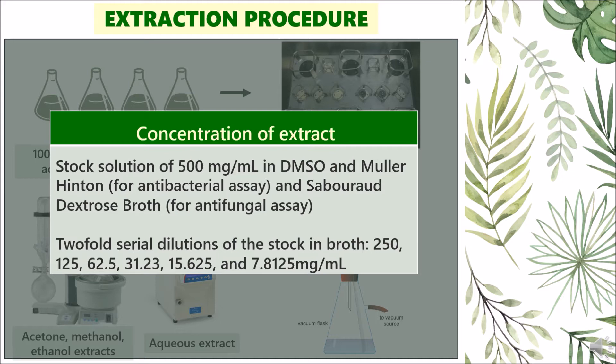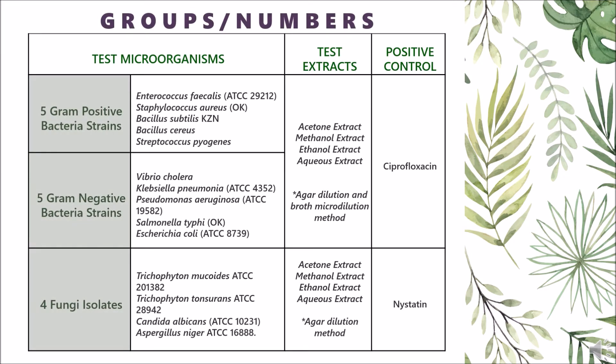Two-fold serial dilutions of the stock in broth were then made in defined concentrations. All microbial strains were sourced from the Medicinal Plants and Economic Development Research Center of the same university. These organisms were chosen because of their roles as opportunistic pathogens to humans and animals, as well as their association with stomach disorders, diarrhea, dysentery, wound, and other infections. In this way, the ethnopharmacological claims of P. capitata as a remedy for such diseases can be validated.